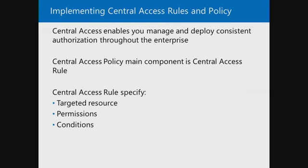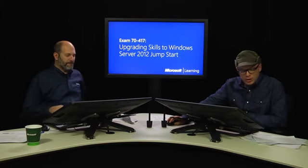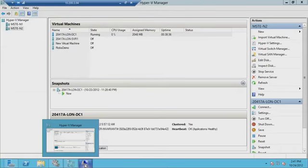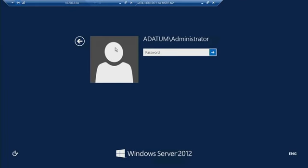Central Access Policies let you manage and deploy consistent authorization across the enterprise using Group Policy applied to files and folders. The rules identify targeted resources, the permissions to apply, and the conditions. Now let's look at a demo of setting this up. Here's my domain controller — I'll launch the Active Directory Administrative Center.